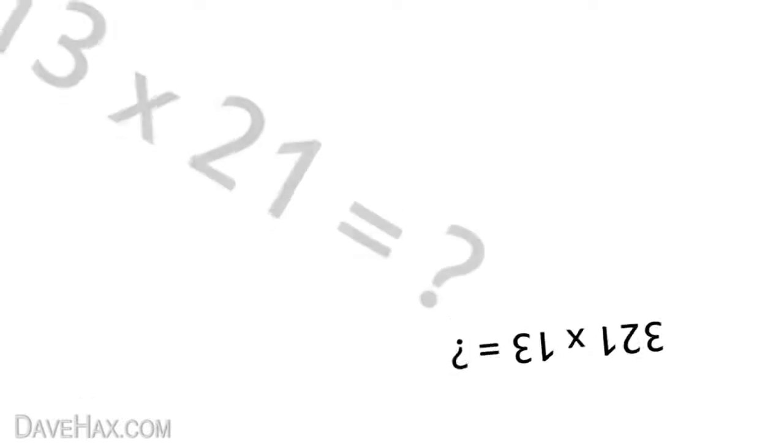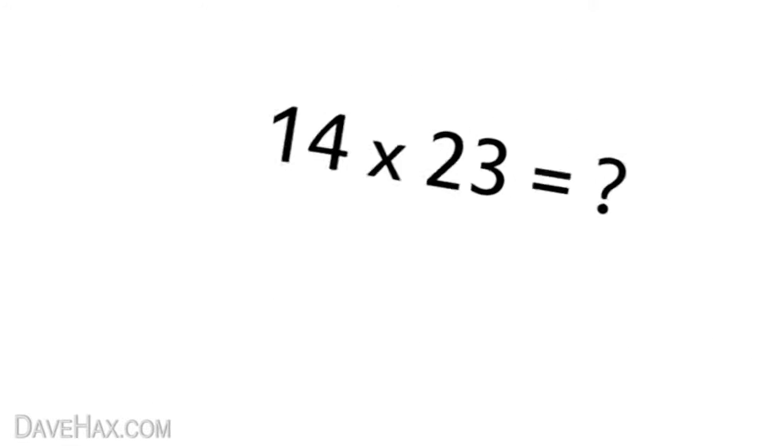Today I'm going to show you a really simple way to multiply two numbers together. This technique originates from Japan and involves substituting numbers for lines. We'll start with 13 times 21.